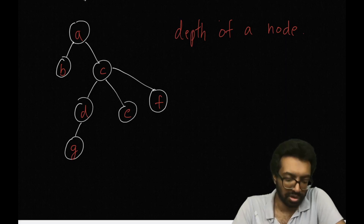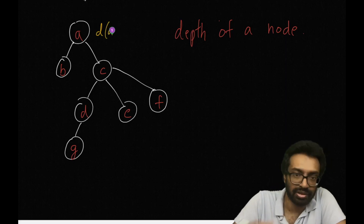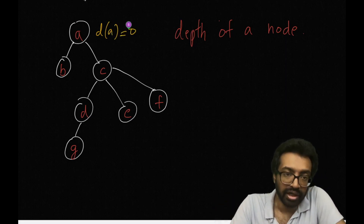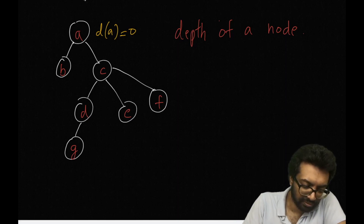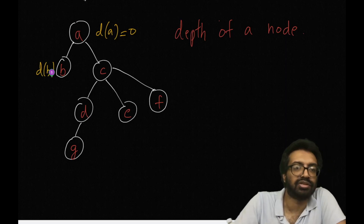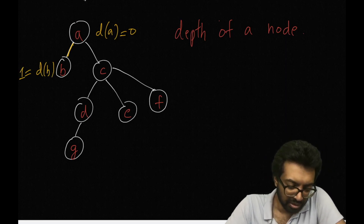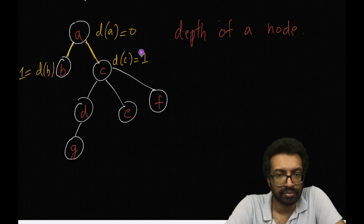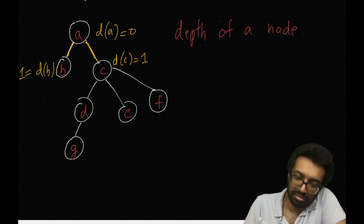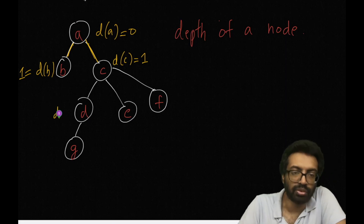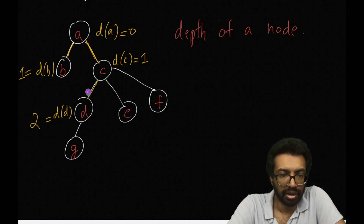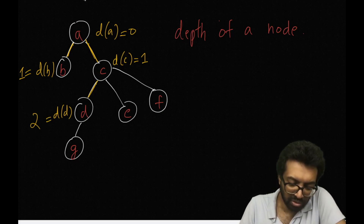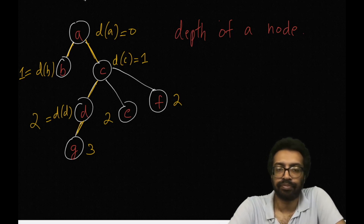Depth of the root node A is 0. Depth of B is 1 because there is just one edge to the root. Depth of C is also 1. Depth of D is 2 because it is a 2-length path to the root. Depth of E is also 2, depth of F is also 2, and depth of G is 3.